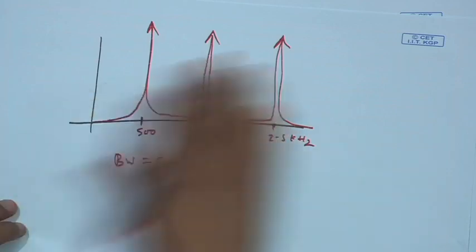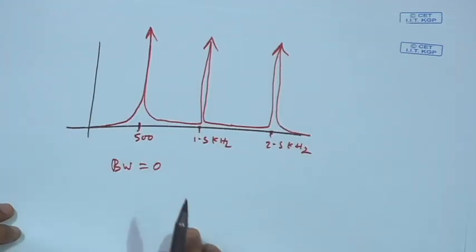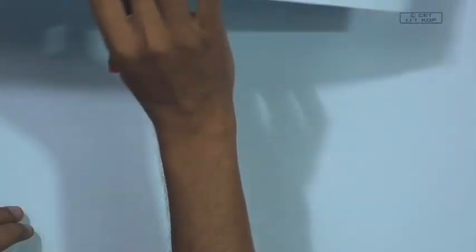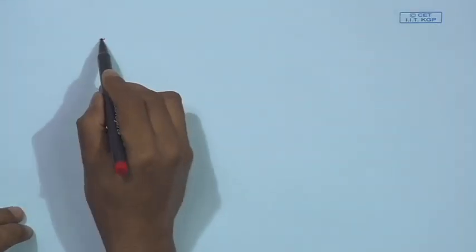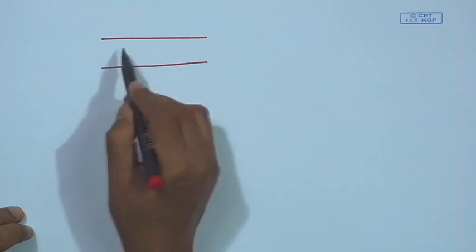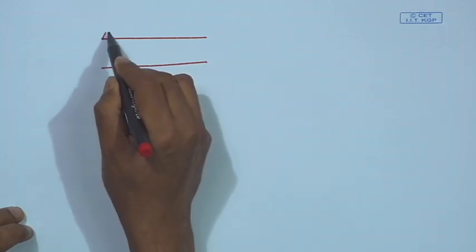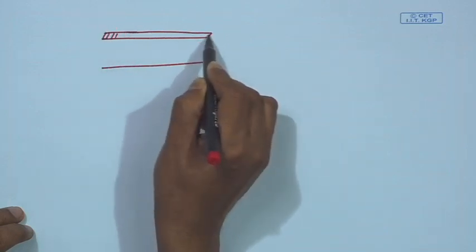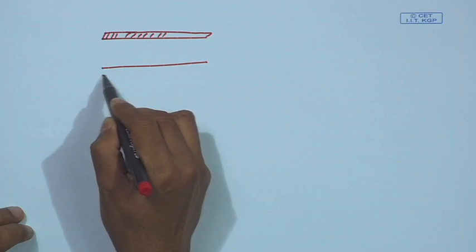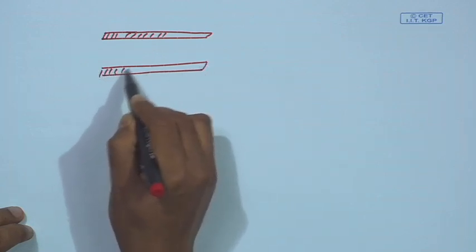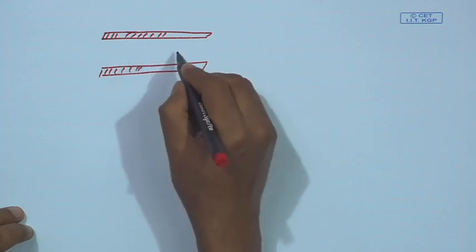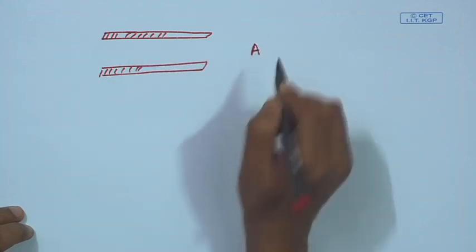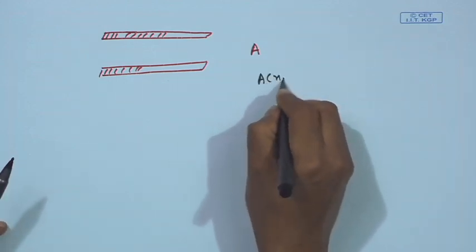We have derived the transfer function of a lossless tube without considering any loss, giving infinite power at 500 Hz, 1.5 kHz, and 2.5 kHz. Now, if I consider that the tube wall, which I supposed to be rigid, is not rigid — if this wall is flexible, it can modify if pressure is high. So instead of cross-sectional area A being fixed, now A is also a function of x and t.